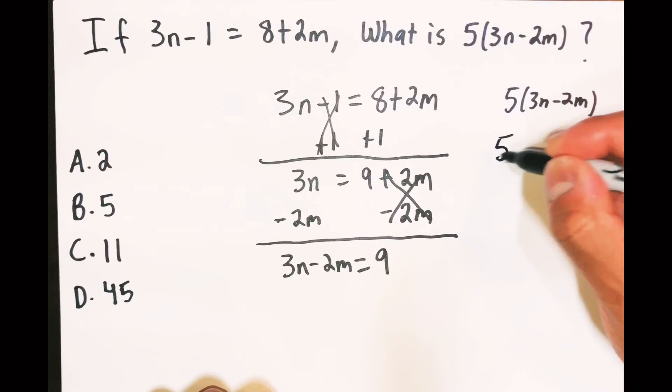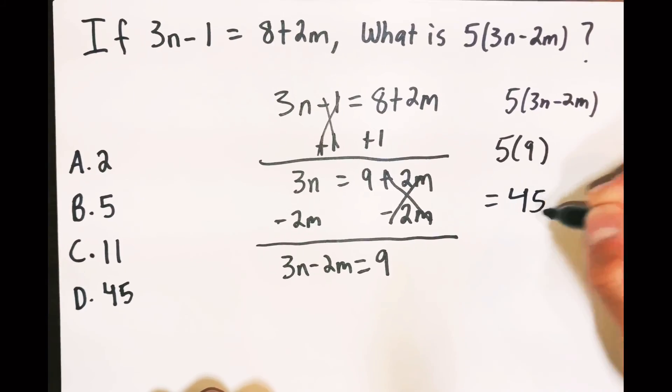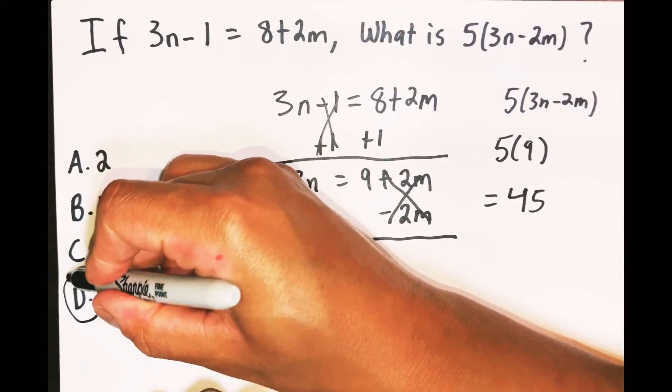So then that's 5 times 9, and 5 times 9 equals 45. So D would be the answer.